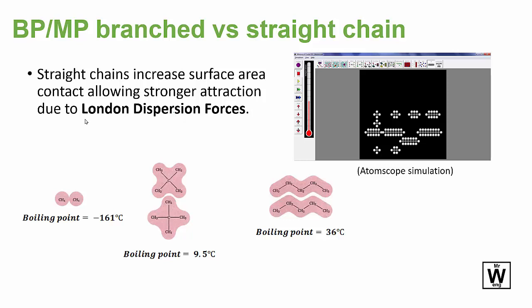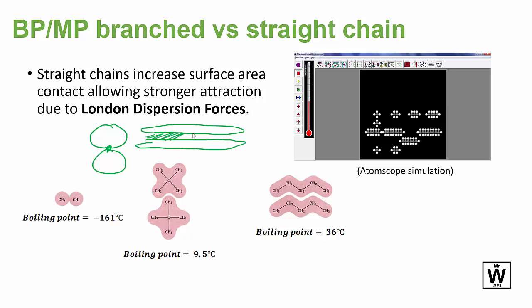Another point: if you have rounded or globular compounds, the surface area is very minimal, whereas straight-chain compounds have a large surface area. So London dispersion forces will increase for straight chains and decrease for globular, rounded-shaped molecules.